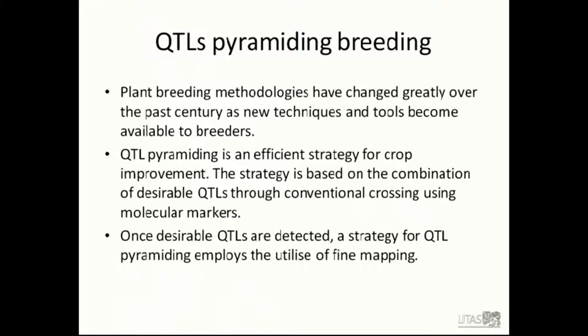Now, turning to QTL mapping. Plant breeding methodologies have changed gradually over the past century as new techniques and tools become available to breeders. Many important traits for crop improvement, such as yield, quality, and quantitative disease resistance, are regarded as quantitative traits and are controlled by multiple quantitative trait loci. QTL pyramiding is an efficient strategy for crop improvement, and the strategy is based on the combination of desirable QTLs through conventional crossing using molecular markers.